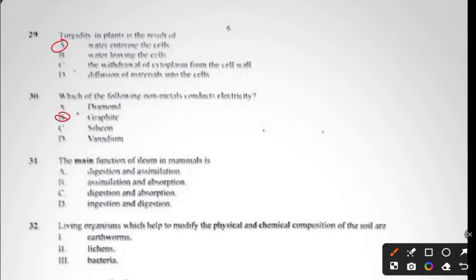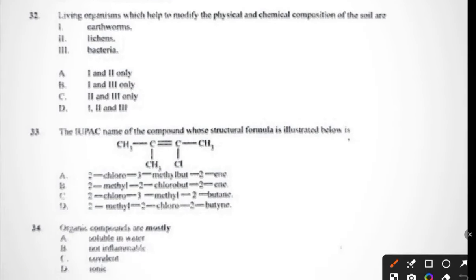Question thirty-one: the main function of the ileum in mammals is digestion and assimilation, absorption, digestion and absorption, or ingestion and digestion. The answer to question thirty-one is C, digestion and absorption. Question thirty-two: living organisms which help to modify the physical and chemical composition of the soil are (i) earthworms, (ii) lichens, (iii) bacteria. Earthworms modify, lichens also modify, bacteria also modify, so all are correct. The answer to question thirty-two is D.